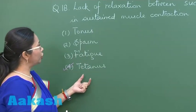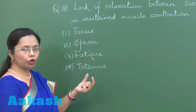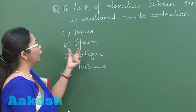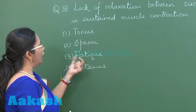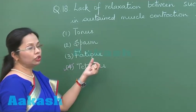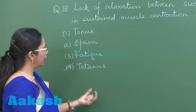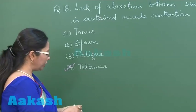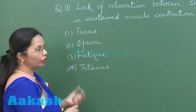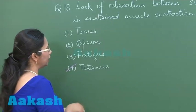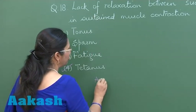The remaining choices are not for sustained contractions. Spasm is a sudden contraction of longer duration, tone is a mild sustained contraction, and fatigue is lack of contraction due to accumulation of lactic acid. So the answer for sustained contraction is tetanus, that is option number four.